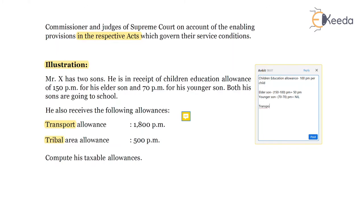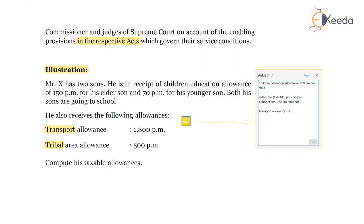For transport allowance — 1,800 per month — this will be exempt entirely. In absence of information, we have assumed that the employee is eligible for exemption for transport allowance as per rule 2BB. There are two types of transport allowance: first, for a blind, deaf, or handicapped person wherein 3,200 per month is allowed; or the transport allowance exemption applicable to an employee whose employer is into transport business, in which case 70 percent of the allowance or 10,000 per month whichever is lower is the exemption amount.